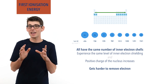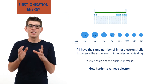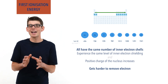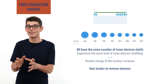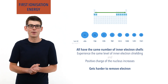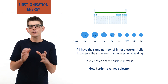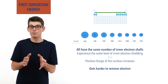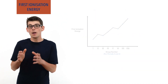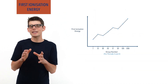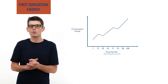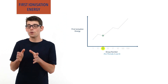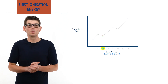Notice that first ionization energy increases as a trend across a period. If we look at the first ionization energies of elements in a period on a graph, we always see two exceptions to this general trend: elements in group 3 and group 6.